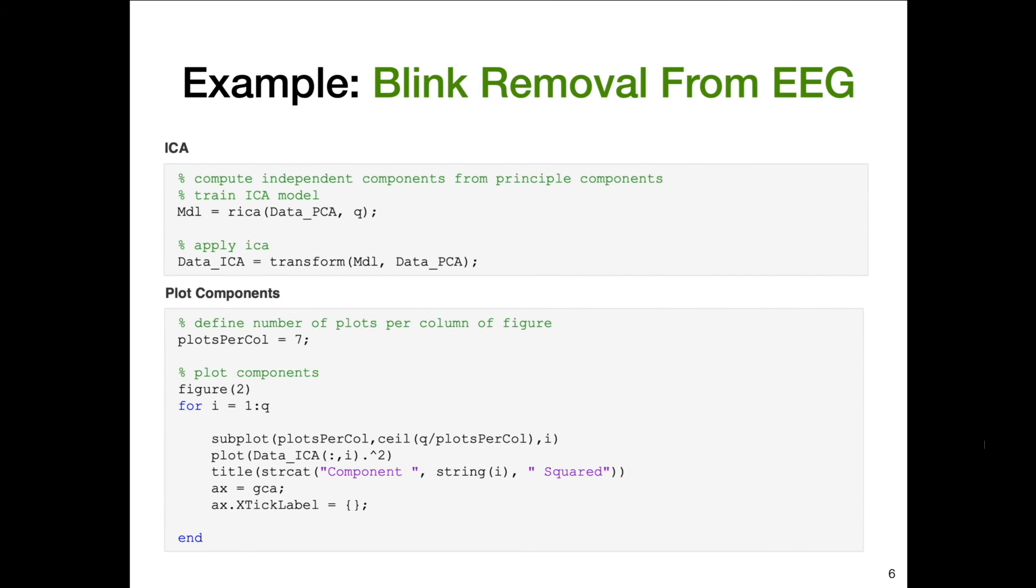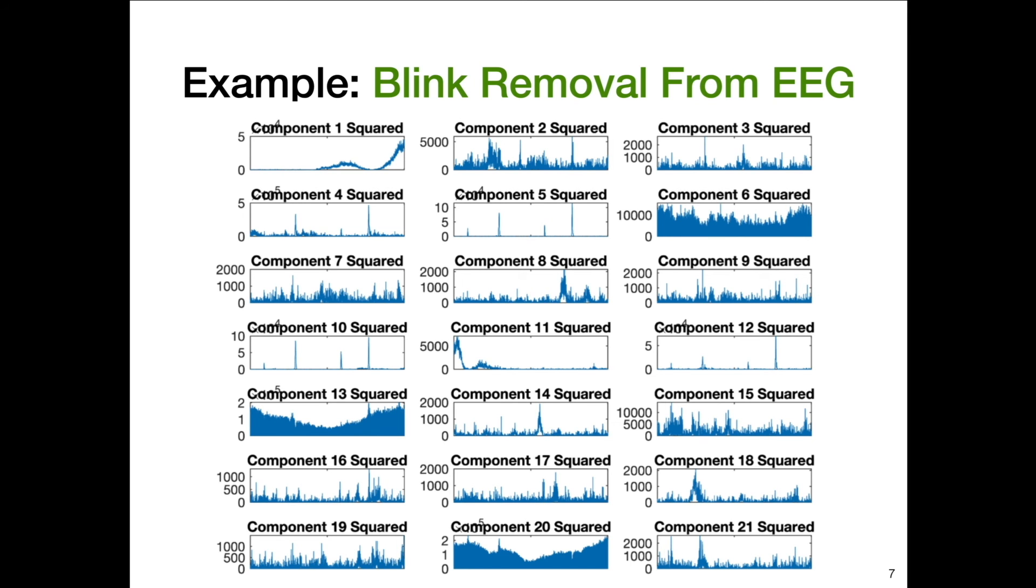If you didn't check out the previous video on PCA, that'll share some example code on how to do that. We can apply ICA to the set of principal components that we got from PCA. That's what's being done here. Now we can just plot all the independent components. We had 64 electrodes on our EEG cap. That translates to 64 variables. We then used PCA to reduce the dimensionality from 64 variables to just 21. And then finally, we applied ICA to those 21 variables to separate out the independent components.